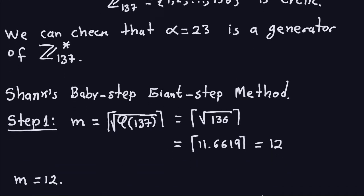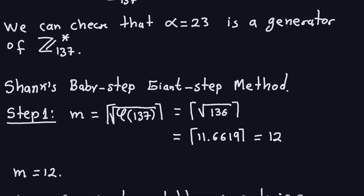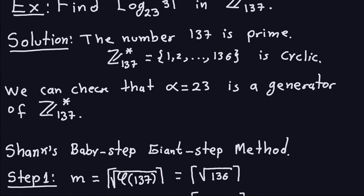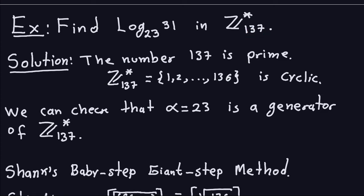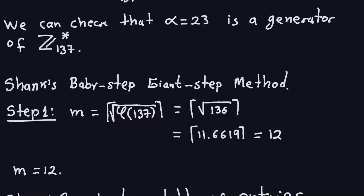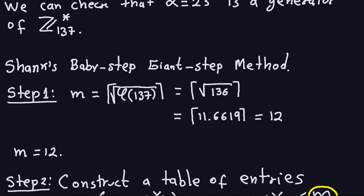Let's go ahead and apply the baby step giant step method. The first thing we have to do is compute m, which is the ceiling of the square root of φ(n), where n is 137. Since 137 is prime, φ(137) = 136. The square root of 136 is 11.6619, and the ceiling of that is 12. So m equals 12.